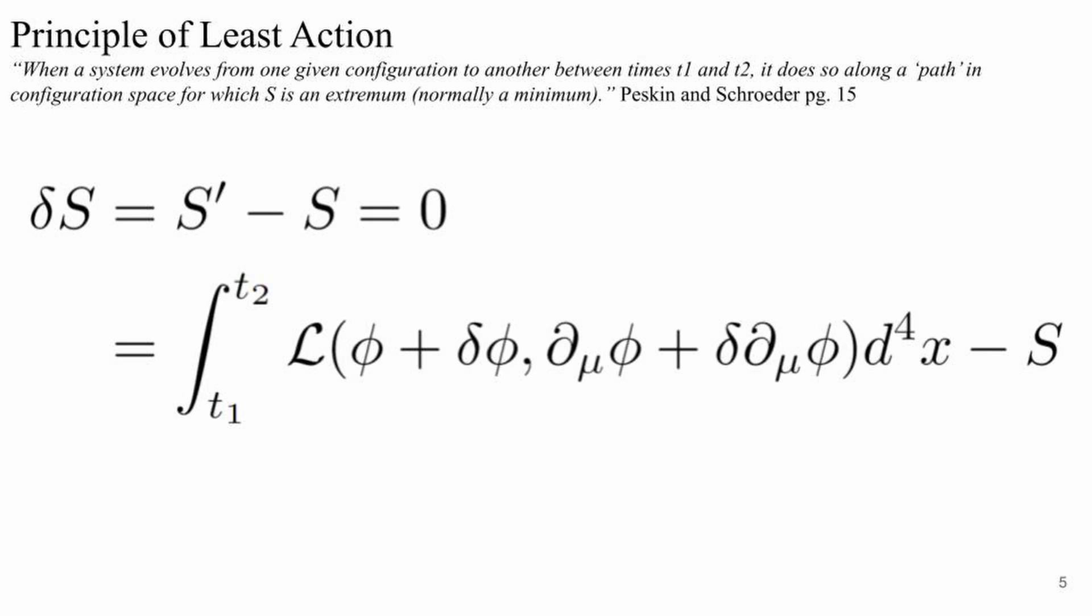For the action to be an extremum, we need to require that the functional derivative be equal to zero, which means the perturbed action minus the original action must cancel out to zero.